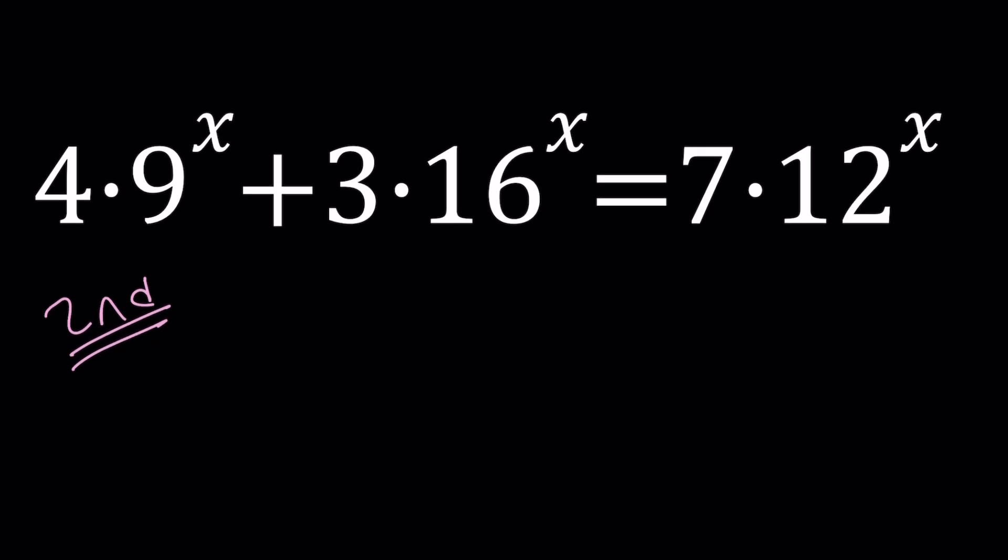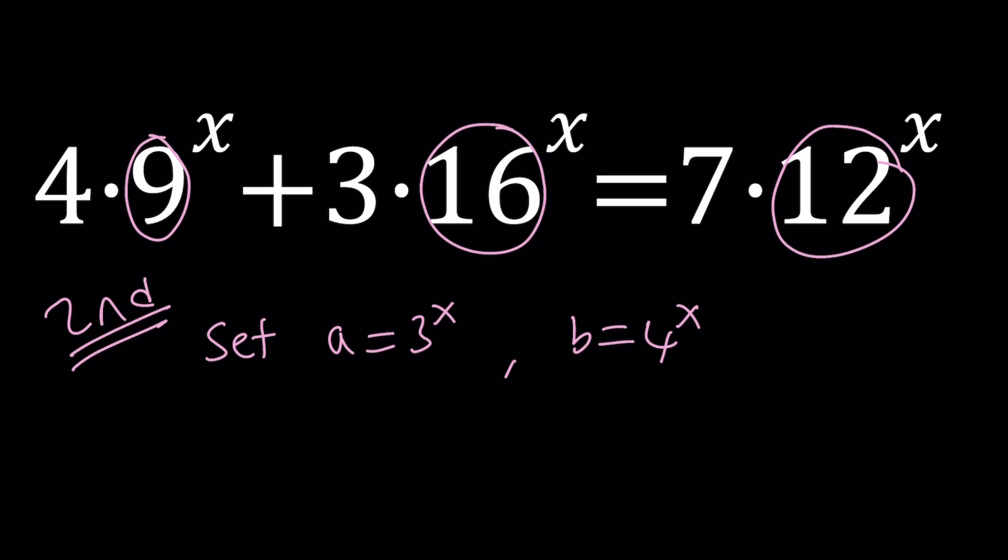So I'm going to go ahead and set a equal to 3 to the power x and b equal to 4 to the power x. One of the things I want you to notice when you see a problem like this, and we've recently done a similar problem. So 9 is a perfect square, 16 is a perfect square, and their product is 144, of course, which is another perfect square. But if you square root that number, you're going to get 12, which is the other base. So these numbers are related.